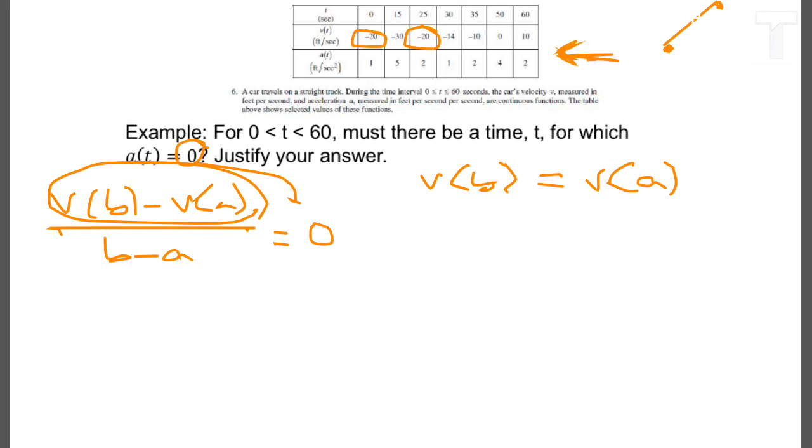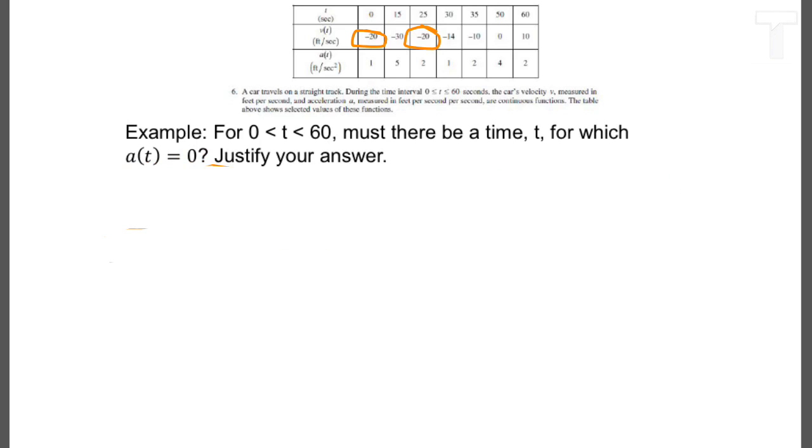So I'm going to leave those points circled. And to use the mean value theorem, I need to do two things. I need to find the average rate of change using the a and b values that I've picked. And then I need to write up my answer using the mean value theorem. So I'm going to do that separately.